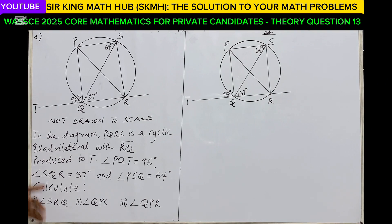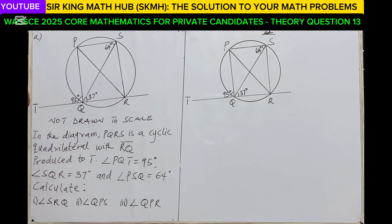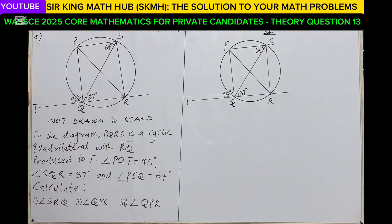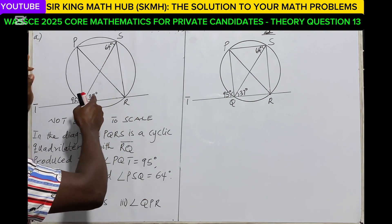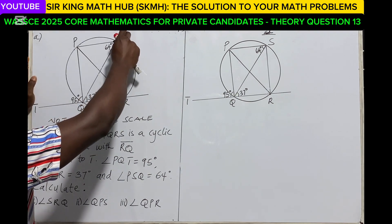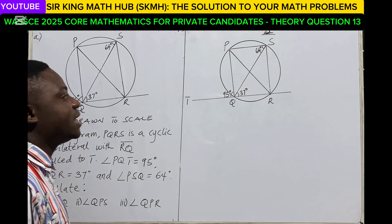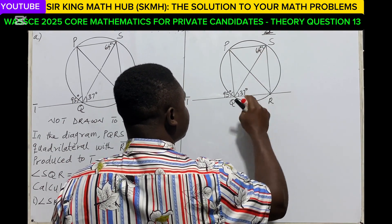This is question 30. Let's begin with part A. In the diagram, PQRS is a cyclic quadrilateral with line RQ extended to point T. Angle PQT measures 25 degrees, angle SQR measures 37 degrees, and angle PSQ measures 64 degrees. We have to calculate angle SRQ — we are looking at this angle here.